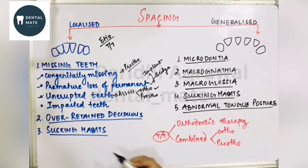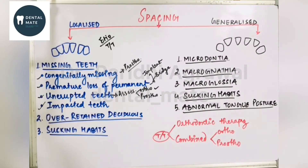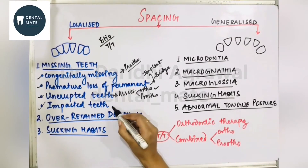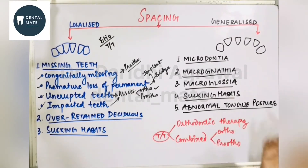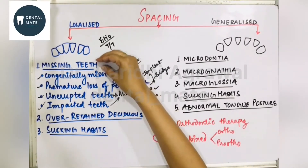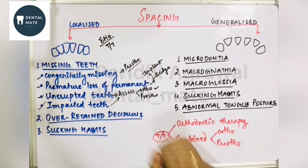For an impacted tooth, similarly assess whether you can bring it into occlusion with orthodontic treatment; otherwise, extract and do prosthodontic replacement. This covers the treatment and etiology when a missing tooth is causing localized spacing.